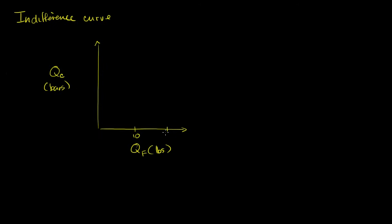The axes will go: 10, 20 on the vertical, and 10, 20 on the horizontal, with increments of 5 and 15 as well. And let's say that right now I am consuming five pounds of fruit per month and 15 bars of chocolate per month. So that would put me right there on the graph.